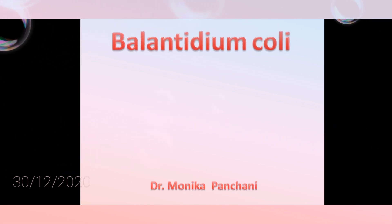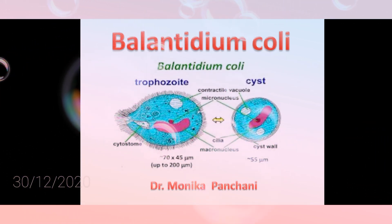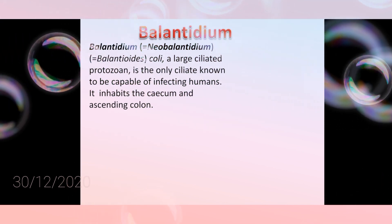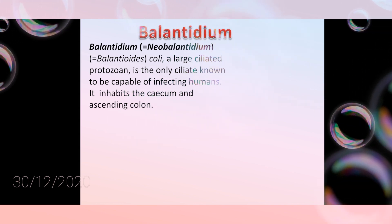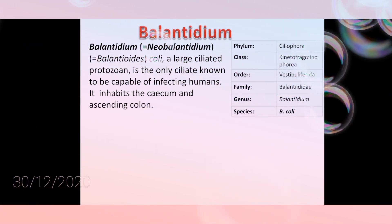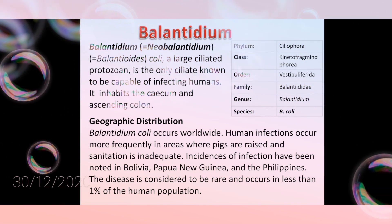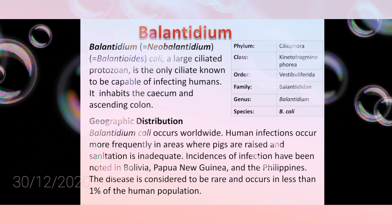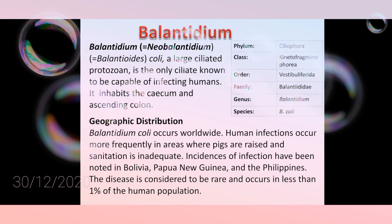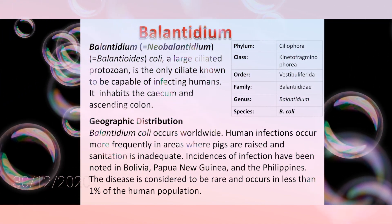The next protozoan is Balantidium coli, which infects the intestine of humans. Balantidium coli is a large ciliated protozoan and it is the only ciliate capable of infecting human beings. It inhabits the caecum and ascending colon. It belongs to phylum Ciliophora and family Balantidiidae. Geographically, Balantidium coli occurs worldwide, but human infection occurs more frequently in areas where pigs are raised and sanitation is inadequate. Incidence has been noted in Bolivia, New Guinea, and Philippines. The disease occurs in less than one percent of the human population.